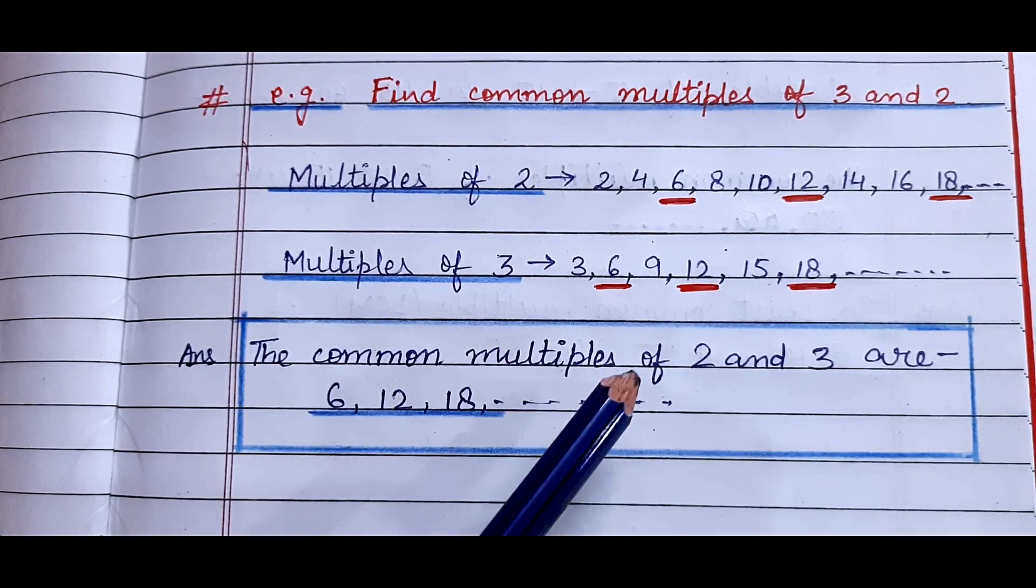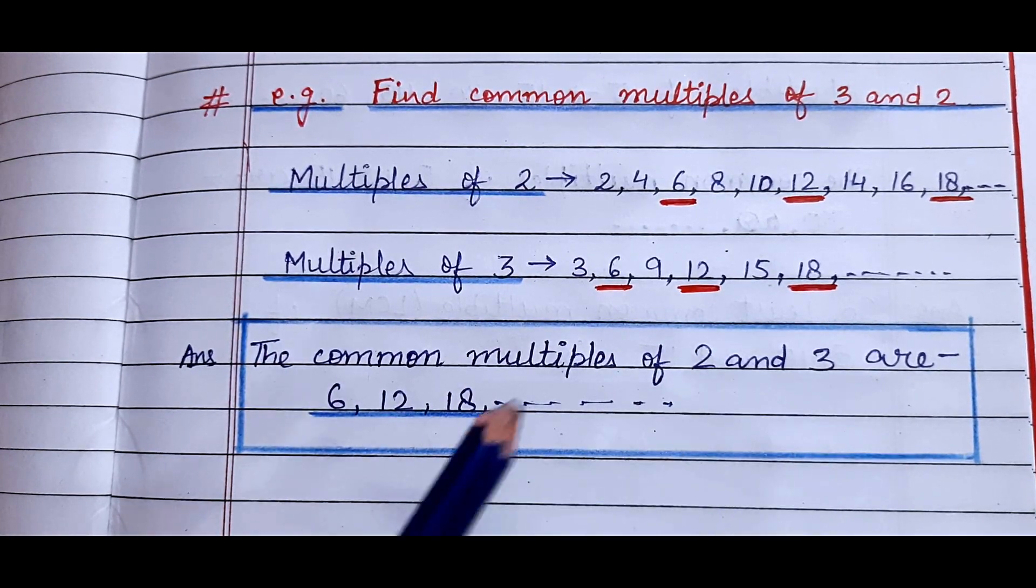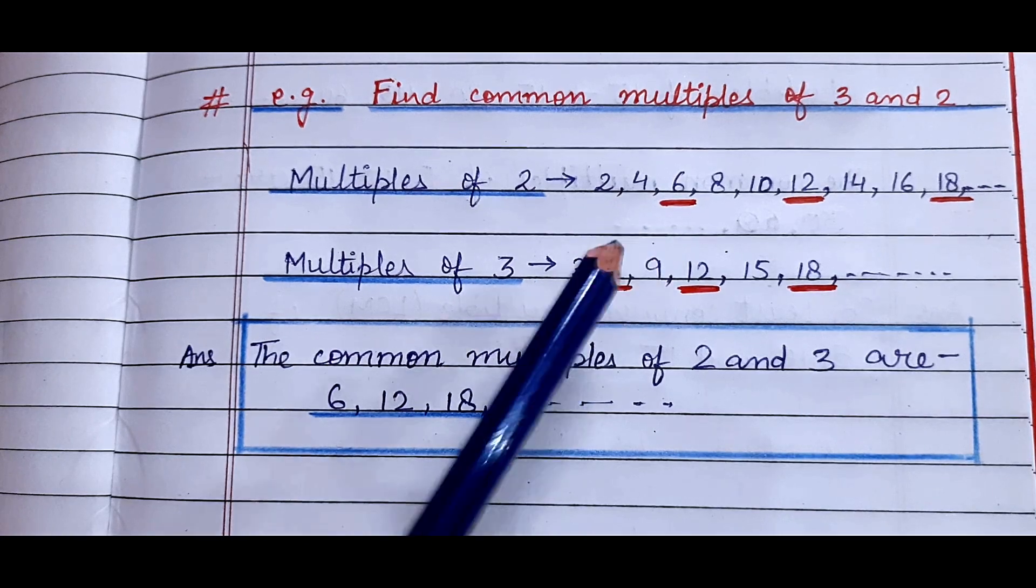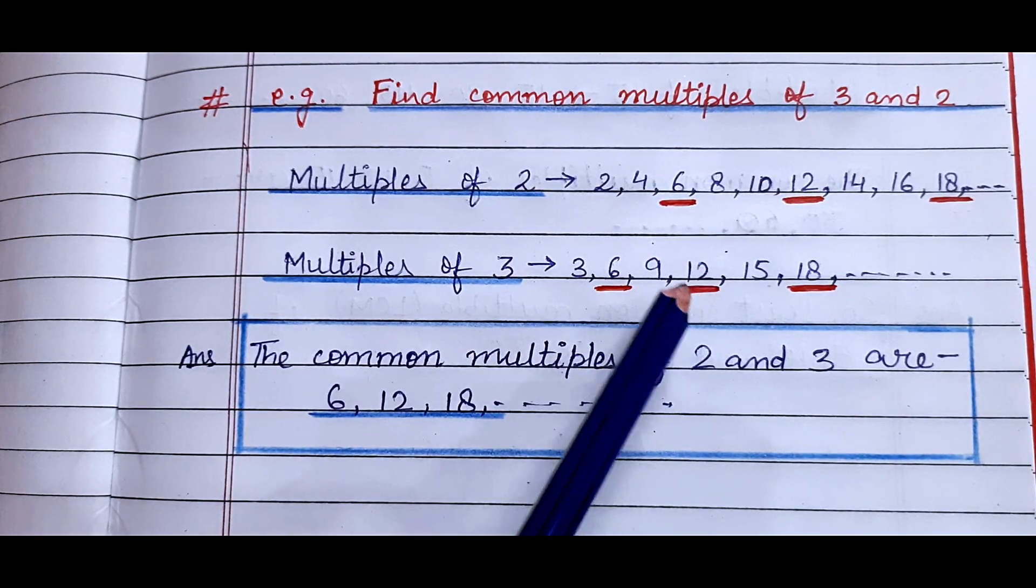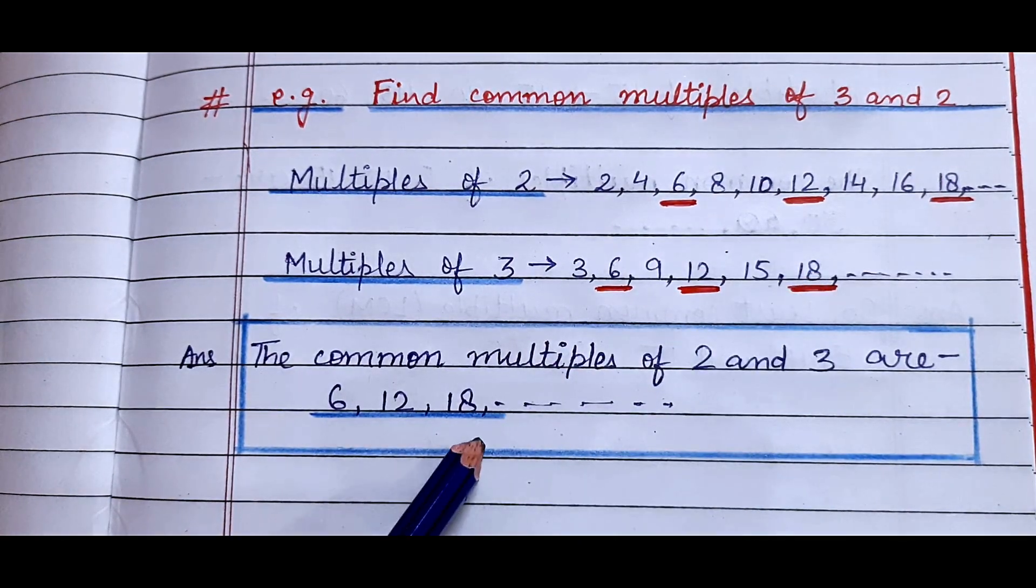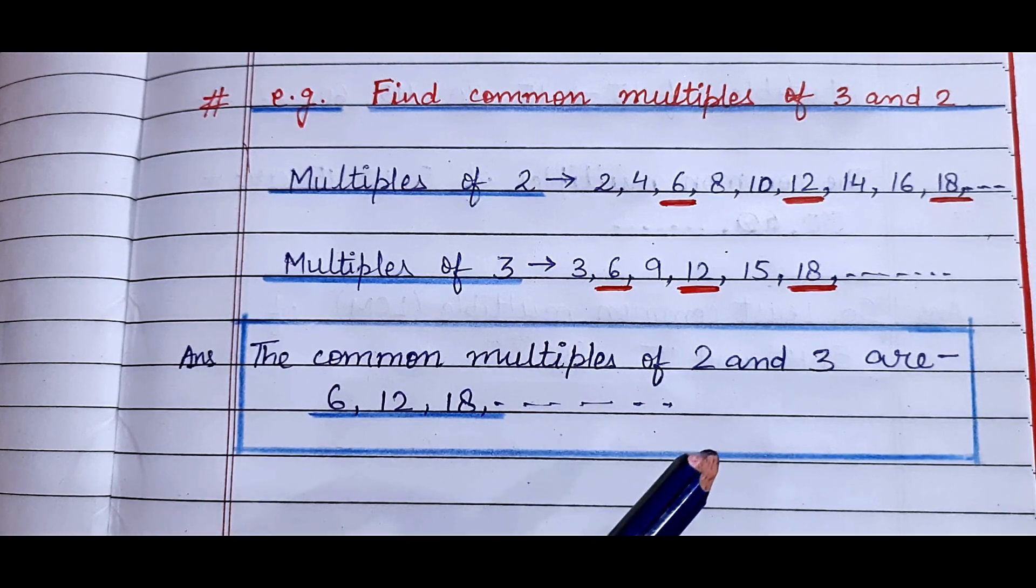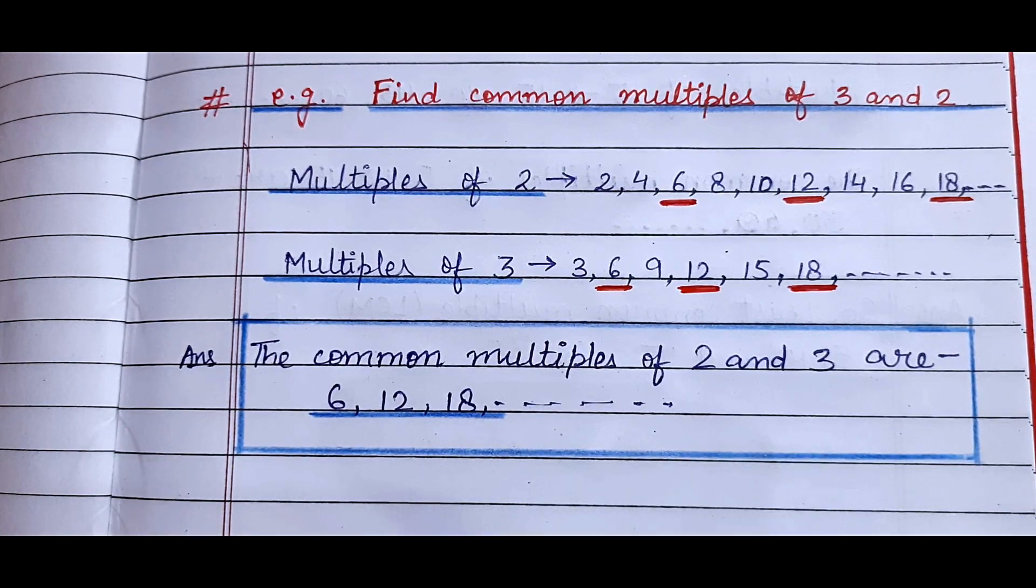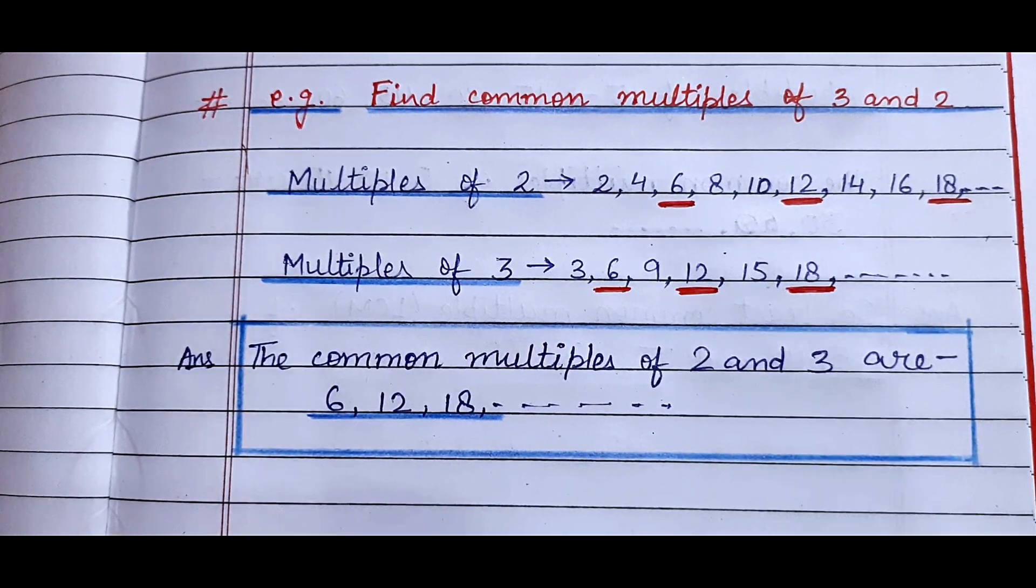So now the common multiples of 2 and 3 are 6, 12, and the third number is 18, and so on because more common multiples are possible. I hope it is clear to you all.